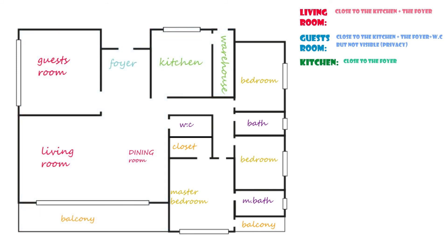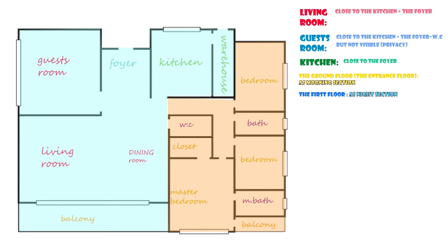Make sure the bedroom doors are not visible from other rooms — there should be a corridor leading to them. If the house has two stories, use the ground floor as the day section and the first floor as the night section. In this case you must have two bathrooms — one upstairs and one downstairs. It would also be nice to add a small mini-fridge or bar on the first floor, because you don't want a little child to go downstairs in the middle of the night just to get water — it's not safe.